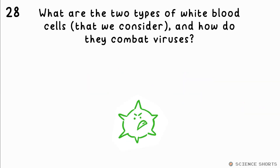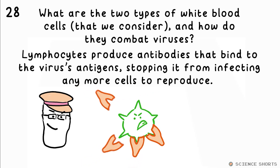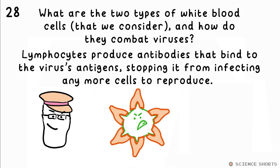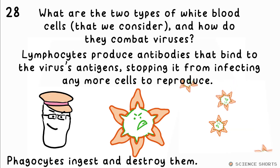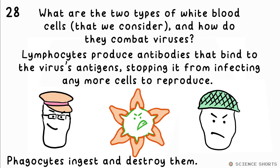What are the two types of white blood cells and how do they combat viruses? Lymphocytes produce antibodies of varying shapes; once the right one is found, many copies are produced. These antibodies bind to the antigen on a virus's protein coat, stopping it from injecting its genetic material into cells. The antibodies also cause the virus to clump together, making it easier for phagocytes to ingest and destroy them.